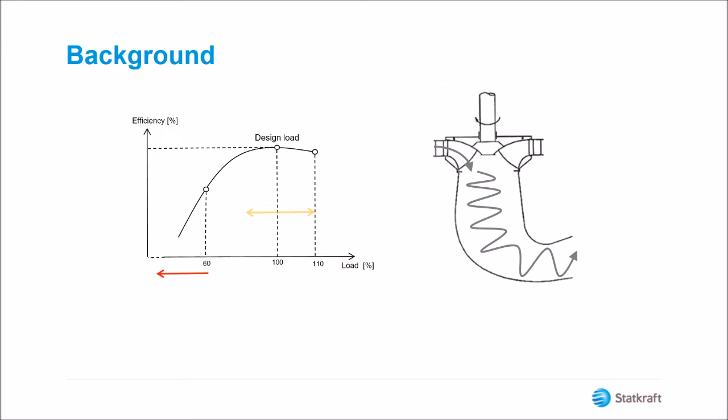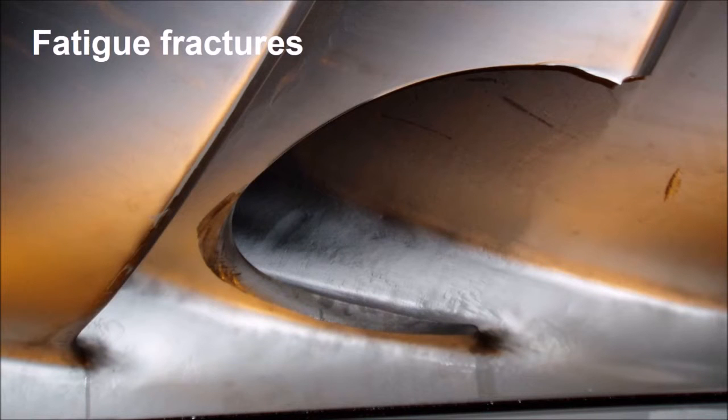At part load, where the efficiency has dropped heavily, and where the flow still is substantial, the rotation of the water will be such that heavy backflows and pressure pulsations can occur. These pressure pulsations can in time cause fatigue fractures to the runner.